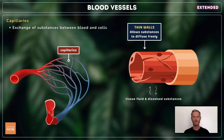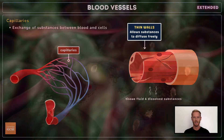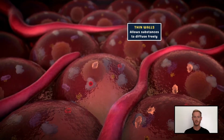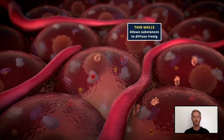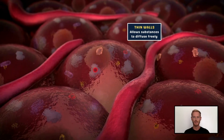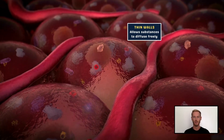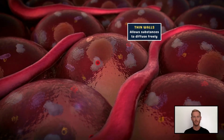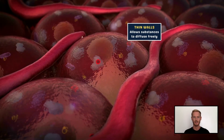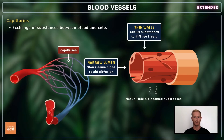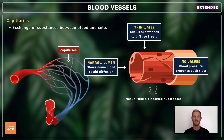Capillaries have extremely thin permeable walls made of a single layer of cells. This reduces the diffusion distance for gases, soluble nutrient particles, blood plasma and tissue fluid, which move into and out of the blood with ease. Capillaries have a very narrow lumen, which slows down blood cells to facilitate the diffusion of materials, and don't have valves as pressure is still high enough to prevent backflow.